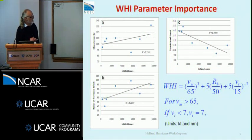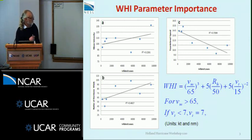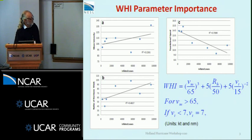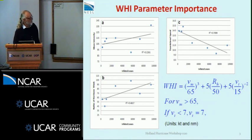The top term is intensity in knots — this is all in knots and nautical miles to be consistent with forecast activity. The next is the radius of hurricane force winds, and the third is translational speed. In order of importance, intensity is the least important, explaining about 20-odd percent of the variance. Size explains around 50%, and translational speed explains something like 70% of the variance.